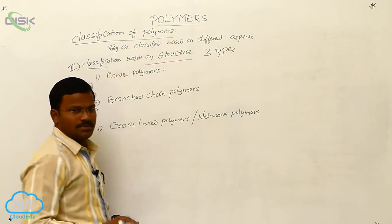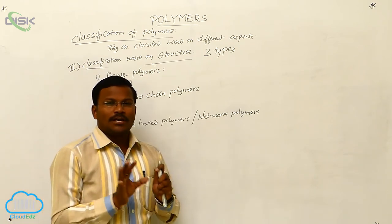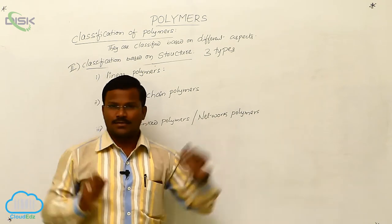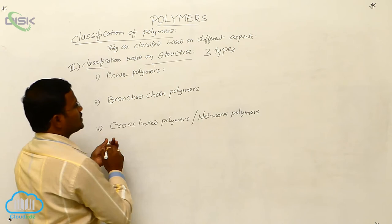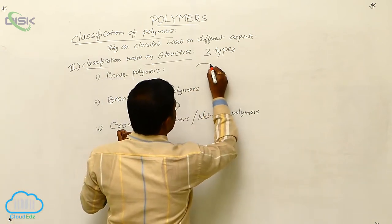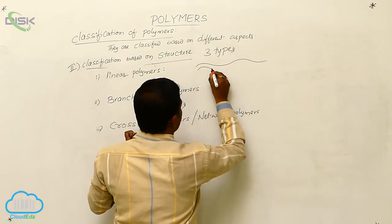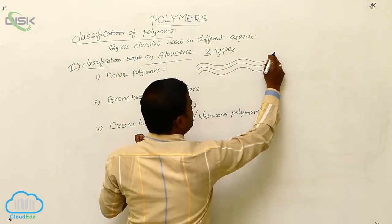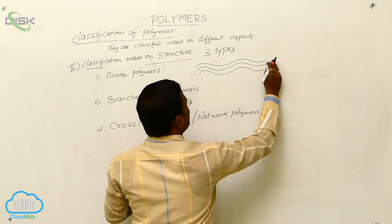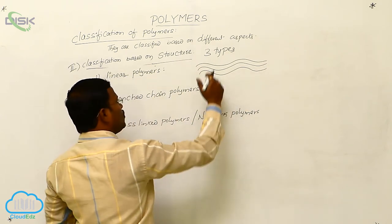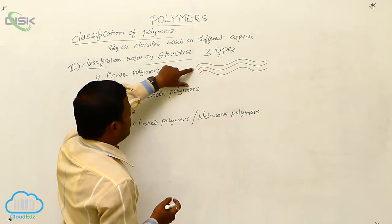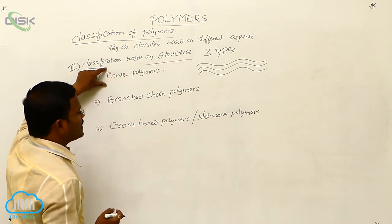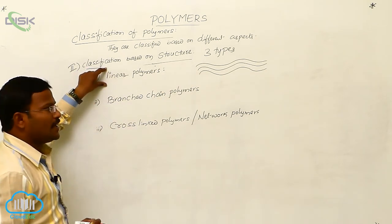Linear polymers are long chain structures. The polymer chains are arranged in a line shape, with no direct binding interactions between one chain and another chain.